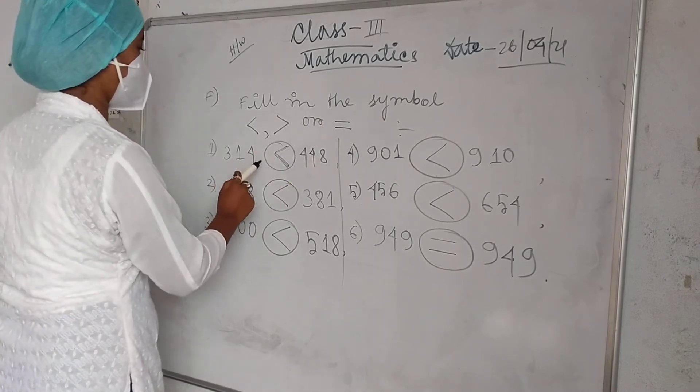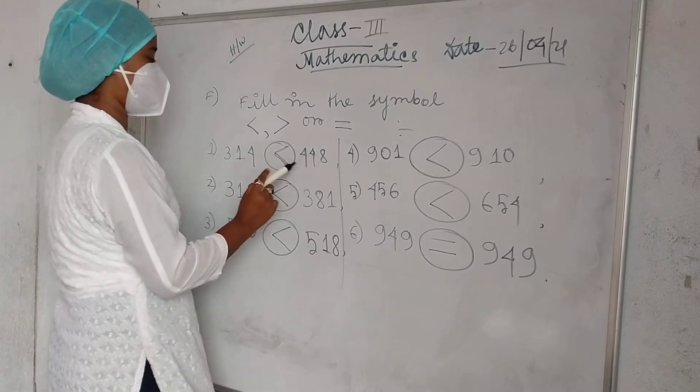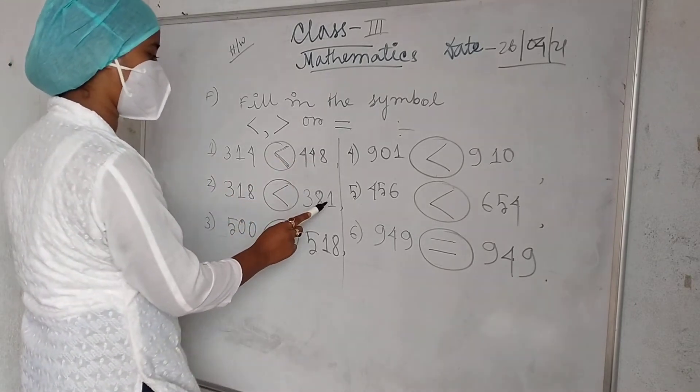So, 314 less than 448. Then 318 less than 281.